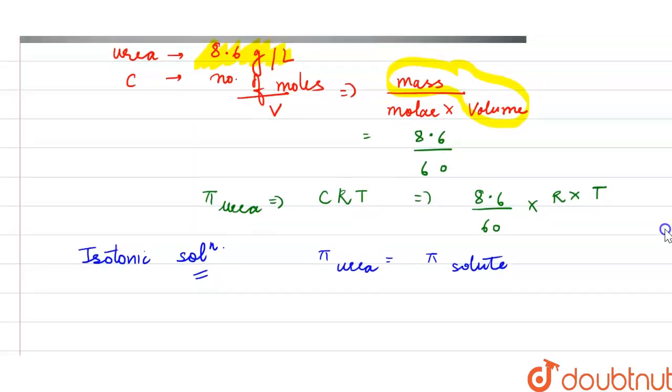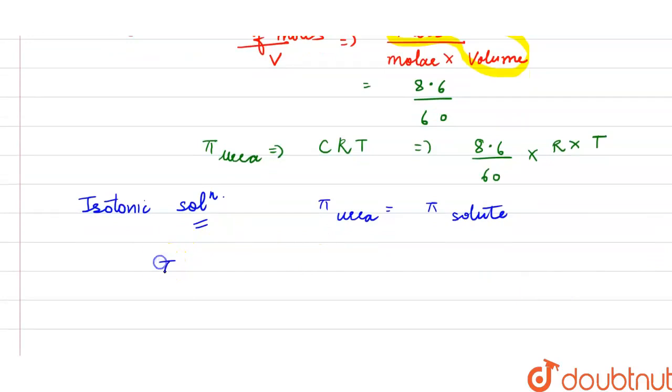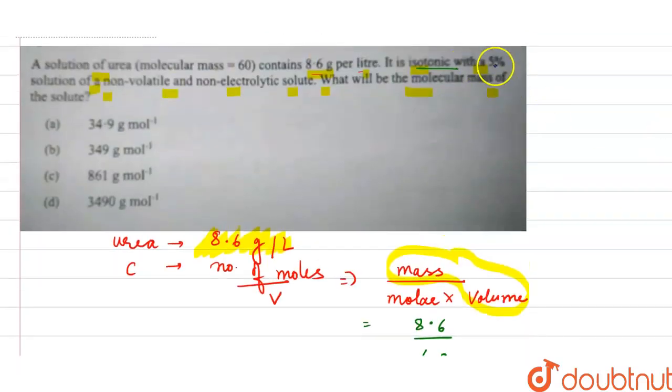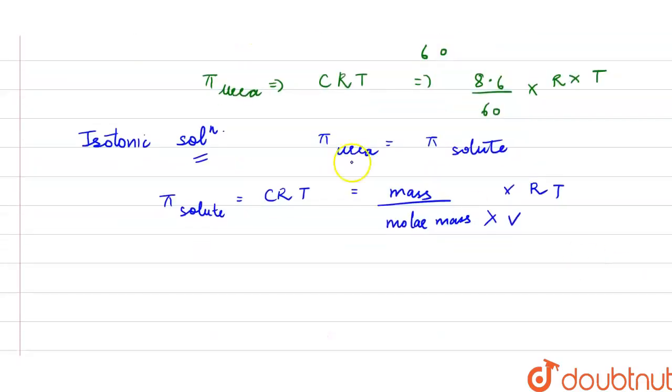So I can write osmotic pressure of the solute equals CRT. Similarly, the mass of the solute upon the molar mass into the volume multiplied with the RT. What is the mass? It is given 5 percent solution.